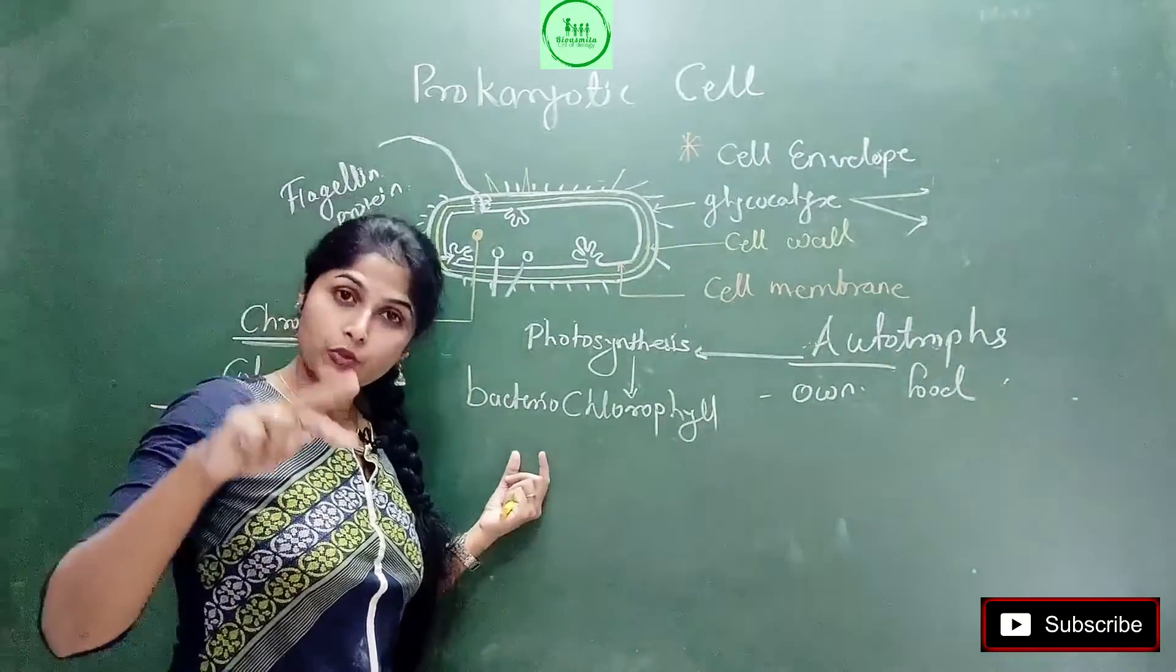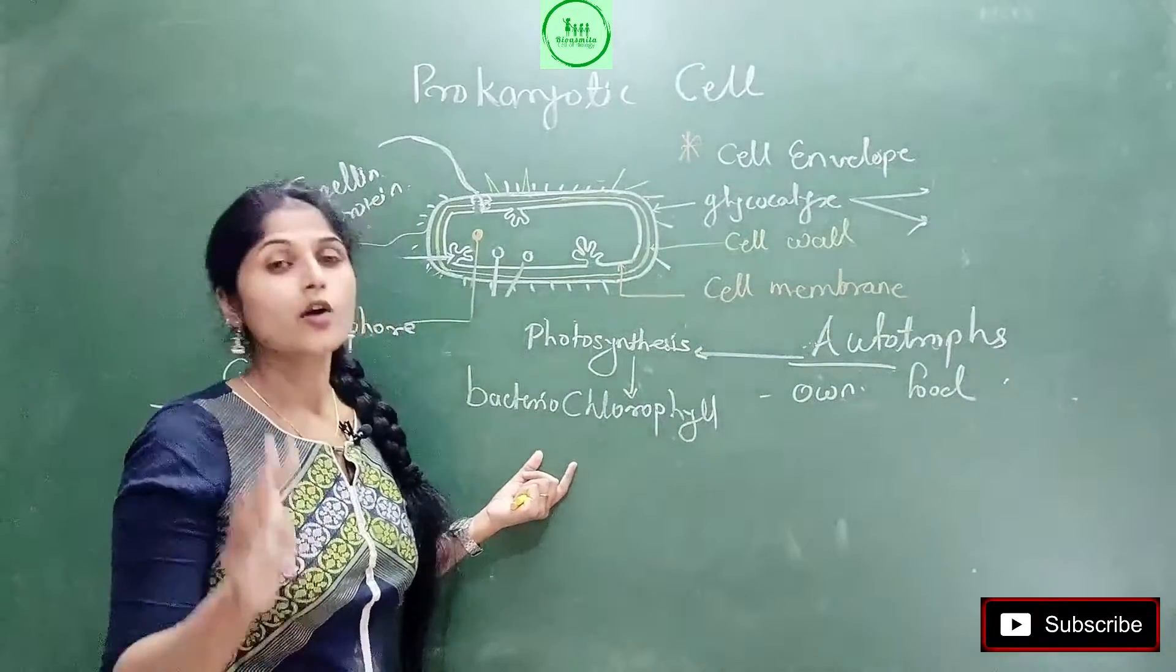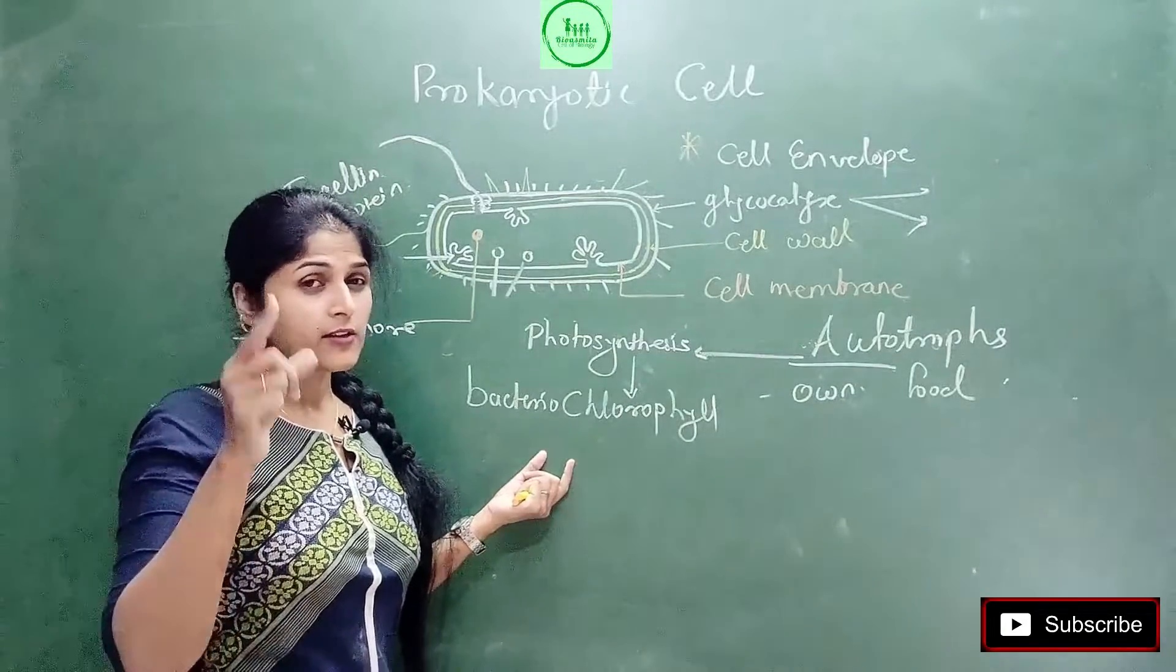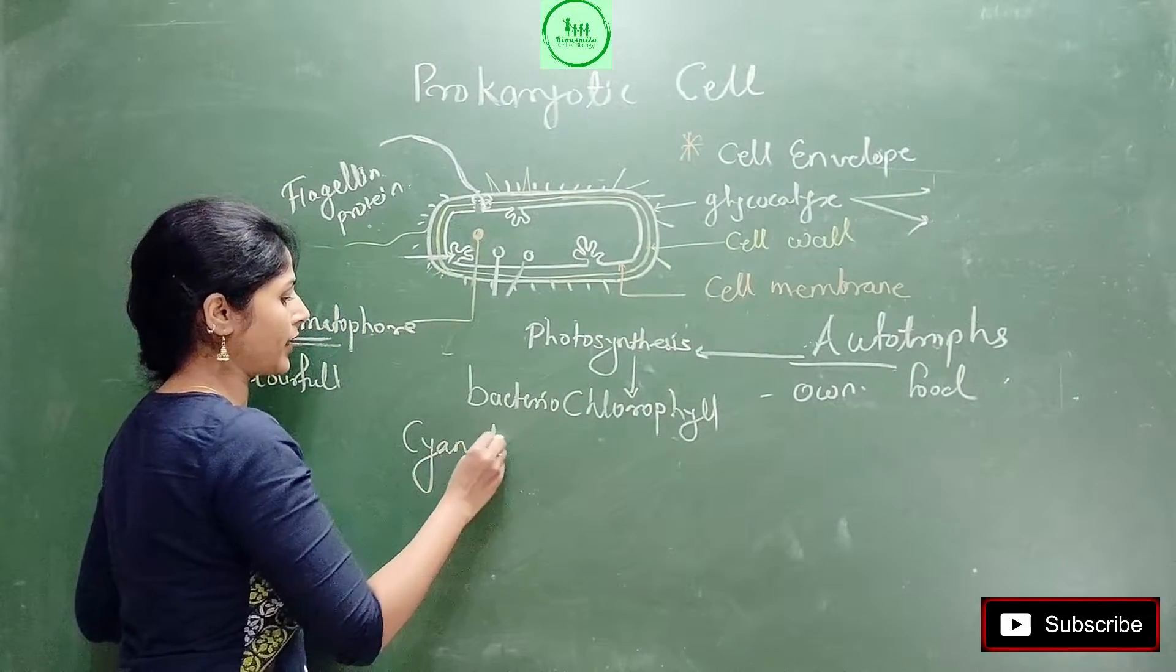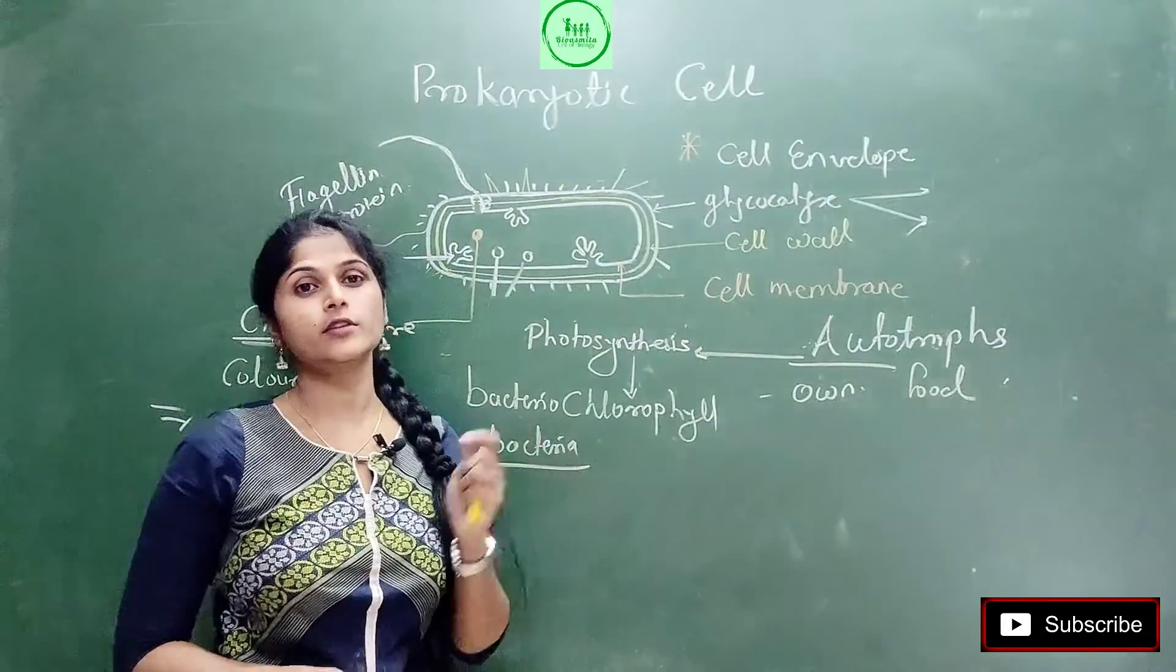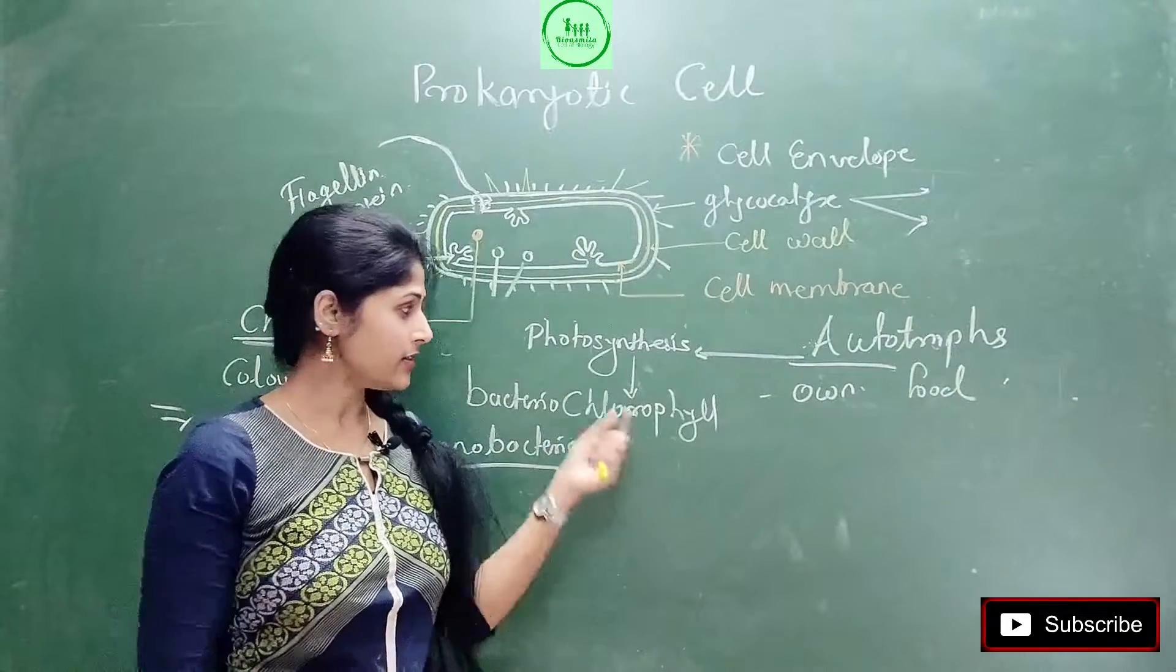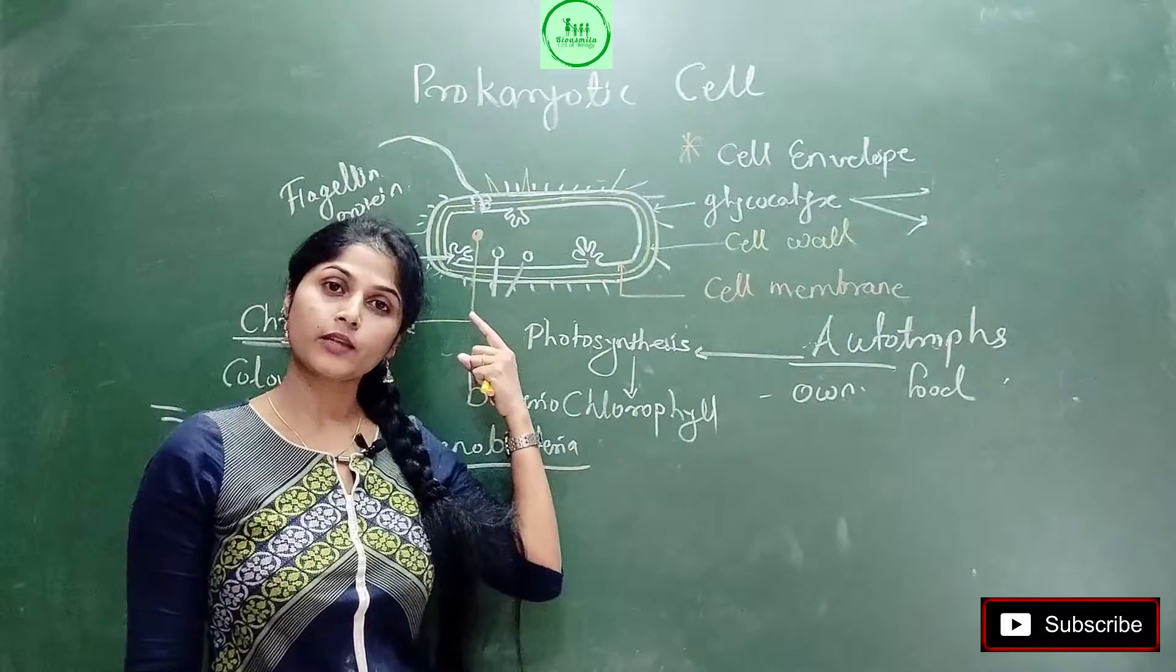So inside this cytoplasm, there is the presence of some structures which store colorful substances. Which colorful substances will be stored basically? Bacteriochlorophyll is stored here. So inclusion body, mesosomes, and along with that chromatophores which store coloring compounds. In the previous video I used the term cyanobacteria. Cyanobacteria are photosynthetic bacteria. These bacteria have bacteriochlorophyll, and where is it stored? It is stored in chromatophores.